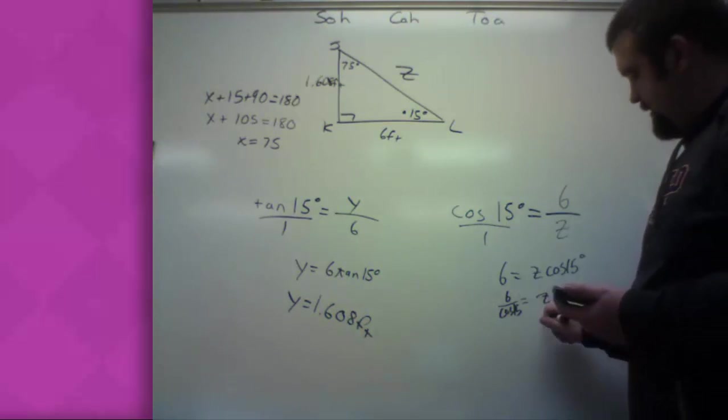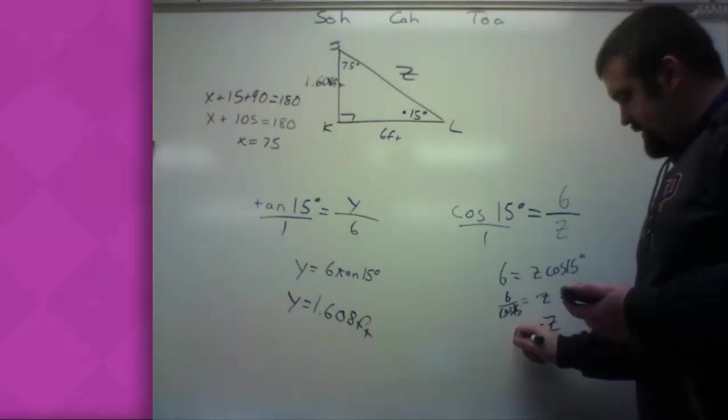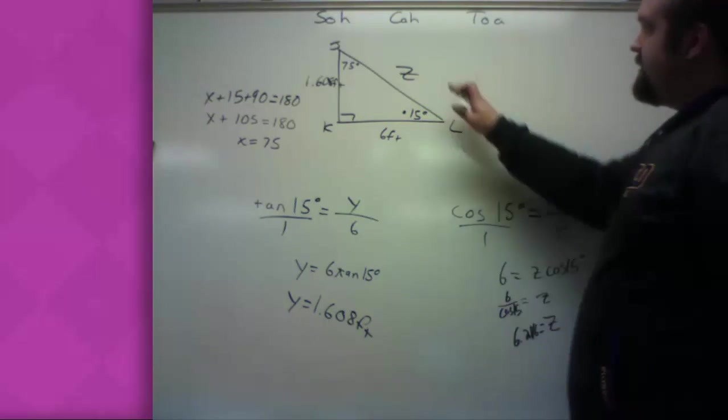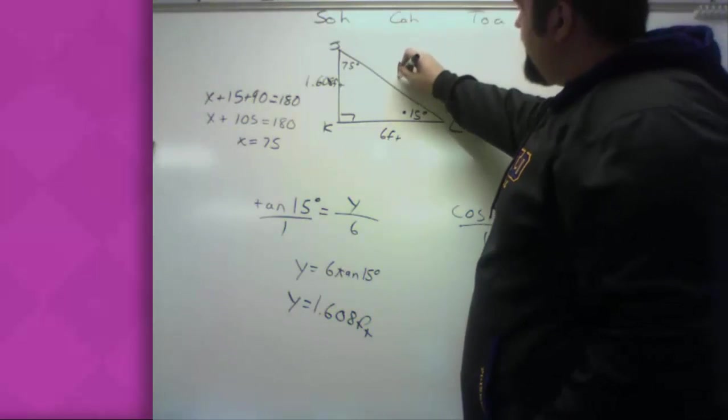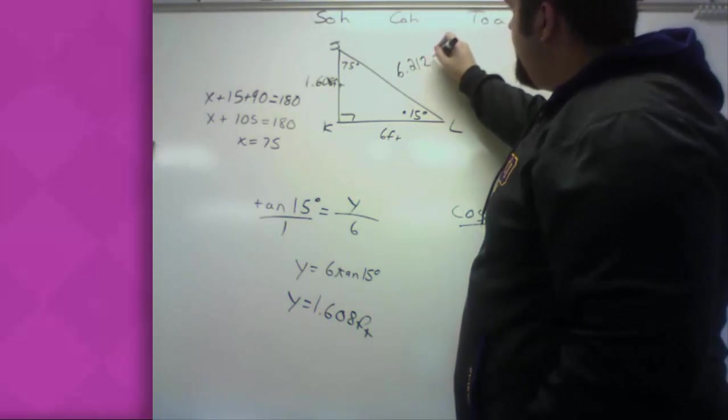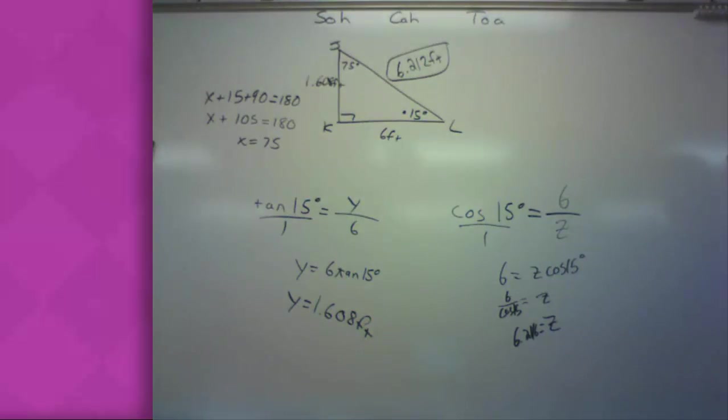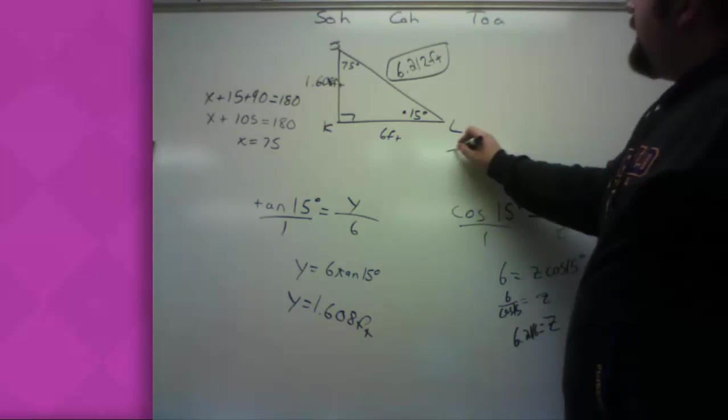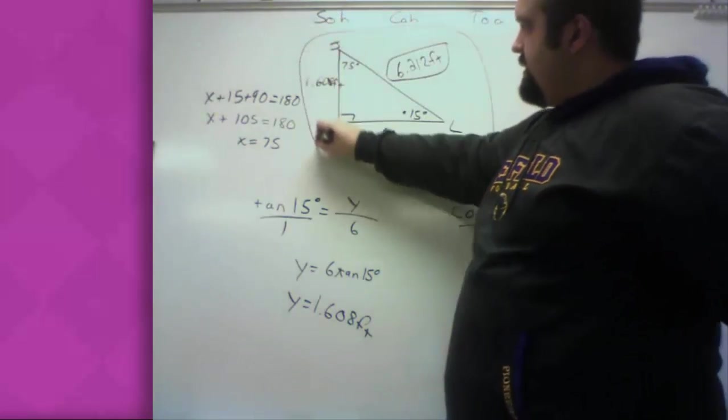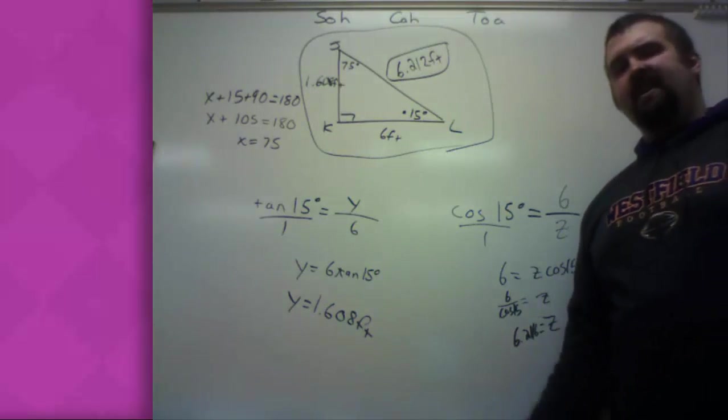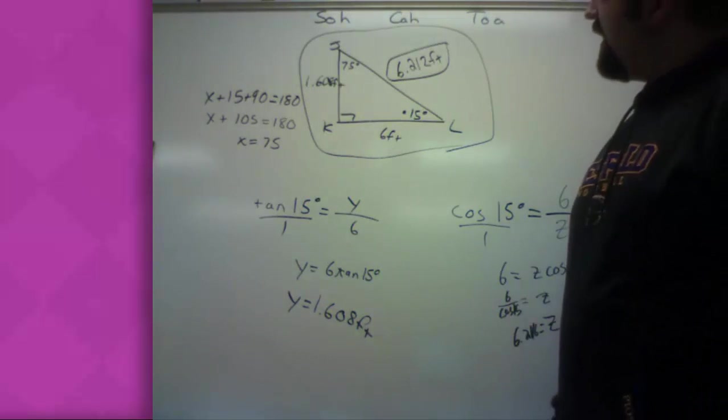Z equals 6 divided by cosine of 15. And again, unless you really know what you're doing, you're going to need a calculator. So plug in 6 divided by cosine of 15. And you should get Z to be 6.2116 feet. So, I look over here. 6.212 feet. I rounded differently. And there I go. I've solved this complete triangle. I've got all the side lengths. I've got all the angle measures. This is what you do if you're given an angle and a side.